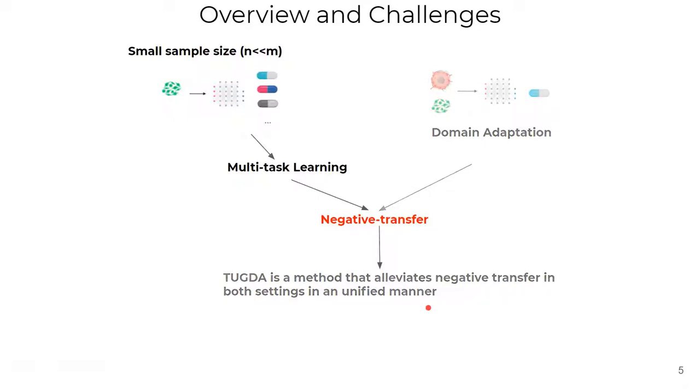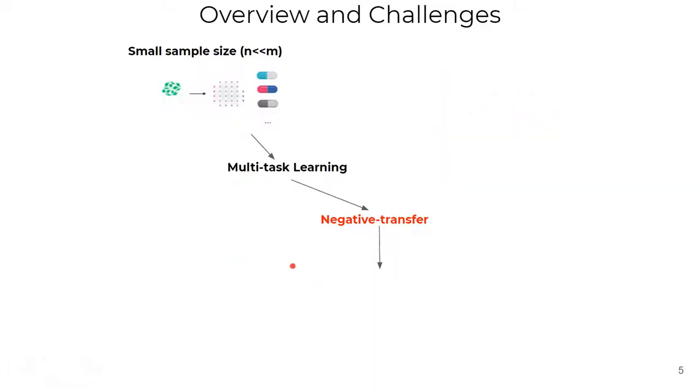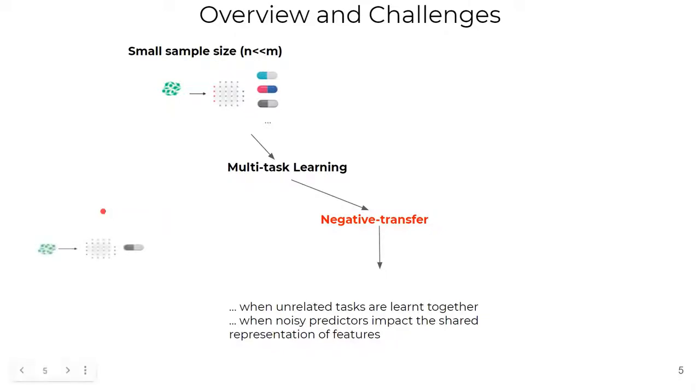First, I'll discuss what is negative transfer in multitask learning settings. This behavior can occur when unrelated tasks are learned together, when poor predictions impact the shared representation of features, and so on. One way to measure negative transfer is to compare the performance of a single-task model and its multitask version. If the performance is worse in the multitask setting, we can say that this drug is experiencing negative transfer. It might be a noisy predictor hurting the performance for the other jointly training drugs.